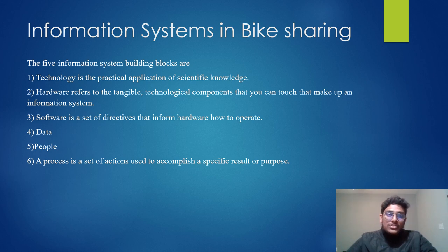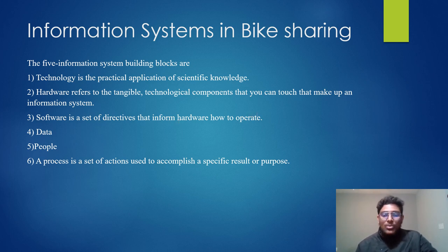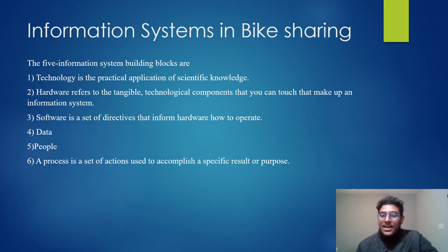The five information systems building blocks are: first, technologies — the practical applications of scientific knowledge. Hardware refers to the tangible technologies you can touch that make up an information system. Software informs hardware how to operate — it is the set of directives. Data, people, and process — the set of actions used to accomplish a specific purpose — are also included.